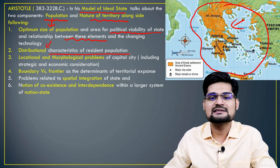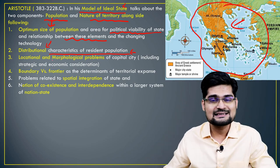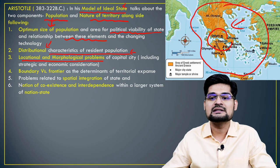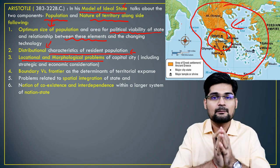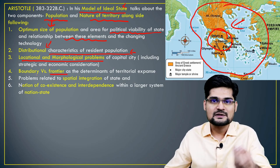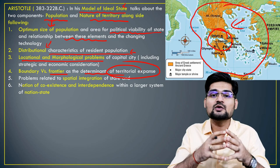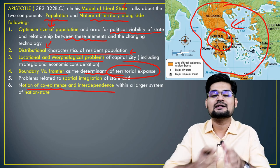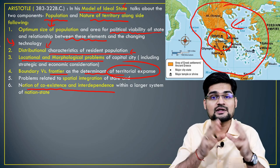Location of the capital city was very important — whether it controls the periphery or not. The boundary versus frontier concept also emerged from Aristotle's basic ideas as determinants of territorial expanse. When defining territorial expanse, one needs to define boundaries and locate frontiers. The notion of coexistence and interdependence in a larger system was also important — a nation-state should have all these characteristics clearly defined.